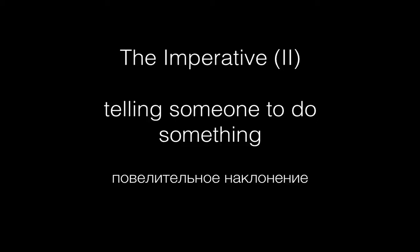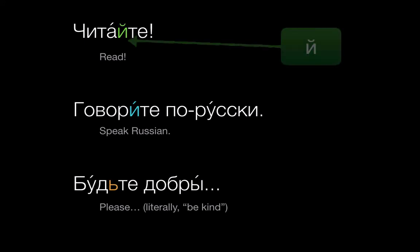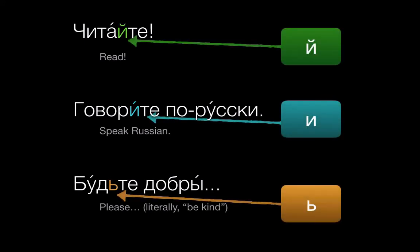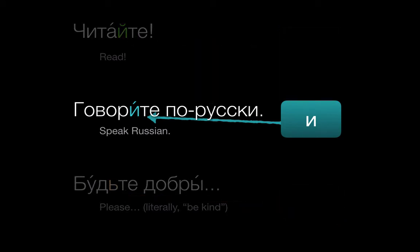In our first video on the imperative, we saw how commands in Russian can have three slightly different endings. Some have и краткое, some have и, and others have the мягкий знак, the soft sign. In this video, we'll cover the second type, with the letter И.